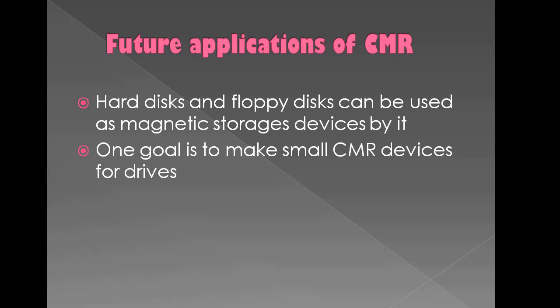Hard disks and floppy disks can be used as magnetic storage devices. These magnetic storage devices store data in the form of digital data — that is, zeros and ones. As we decrease the bit size into smaller dimensions, it becomes applicable. One goal is to make the smallest CMR devices for drives, meaning it can be used in the future as a magnetic storage device.